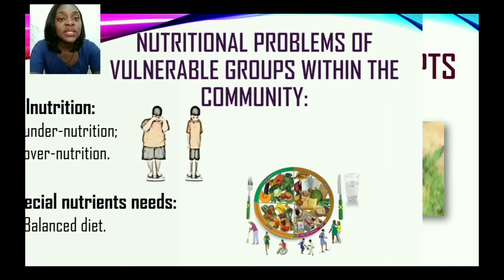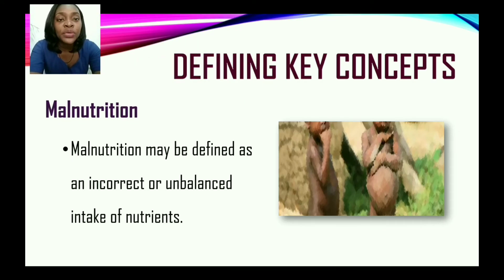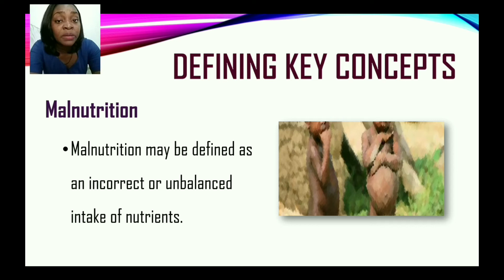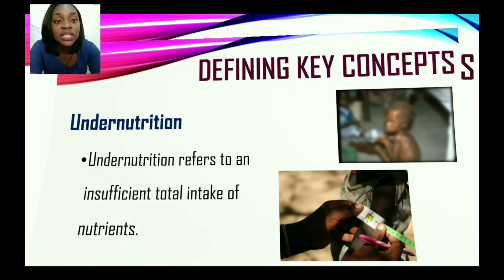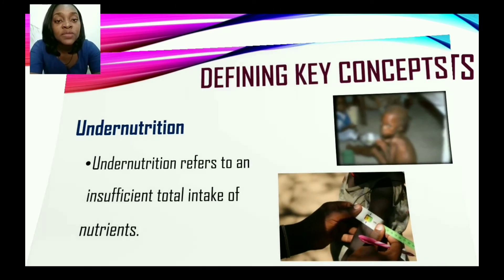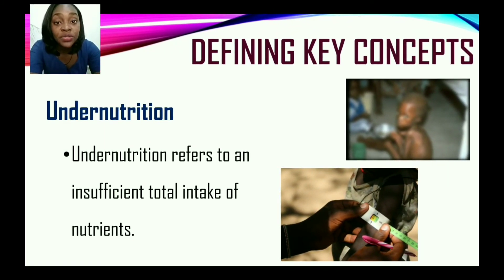Malnutrition may be defined as an incorrect or unbalanced intake of nutrients. When nutrient needs are incorrect or unbalanced, the person may be overnourished or undernourished. Let us first look at undernutrition.